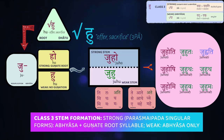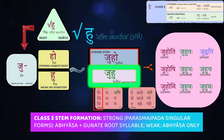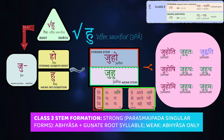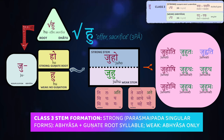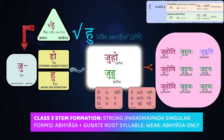We end up with two different stems. Since it's a non-gana, we'll have a strong stem used for parasmaipada singular forms — ti, si, and mi — and a weak stem used for all other parasmaipada endings and the entirety of the atmanepada paradigm. To form the strong stem in Class 3, you first apply abhyasa to the root, then gunate the second syllable — the original root. To form the weak stem, you just do abhyasa with no gunation.